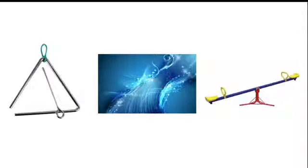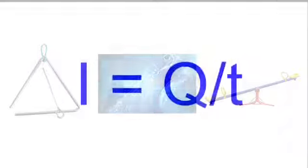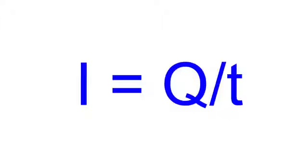So we're going to look at triangles, the flow method, and the balance method. We're going to do this with the equation that defines current. Current is charge divided by time, the rate of flow of charge.